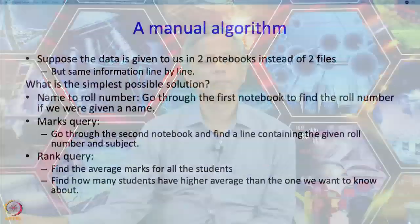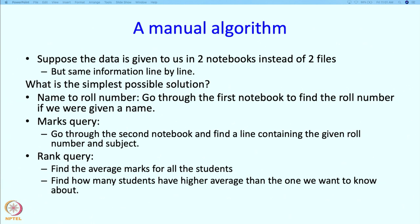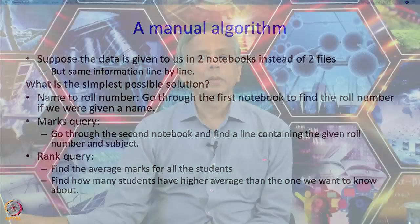This is going to be a somewhat involved task. Then we will have a table of the average marks obtained by every student. And then in this table, we have to figure out how many students have a higher average than the one whose rank we want to know — that will tell us exactly the rank. So those were the manual steps. How do we translate the manual steps into computer steps?